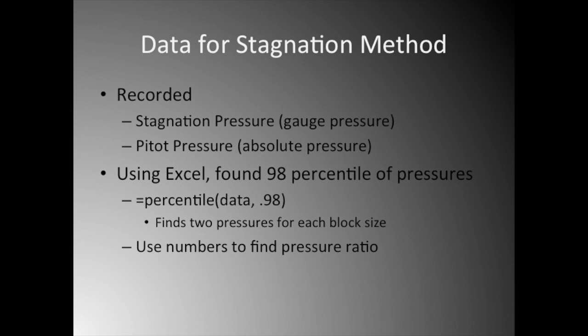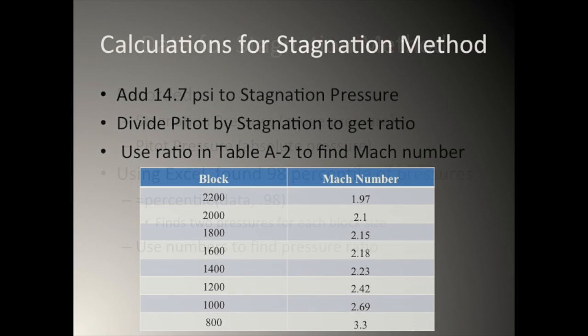Those numbers are then used to find the pressure ratio. For the stagnation pressure method of calibrating the supersonic wind tunnel, 14.7 psi was first added to the stagnation free stream pressure. The pitot tube pressure was divided by the stagnation pressure to get a pressure ratio. By using this ratio and table A2 from the Fundamentals of Aerodynamics book by John Anderson, the shock jump tables, the Mach number for each block size was found. As shown in the table, as the block size decreased, the Mach number increased from 1.97 to 3.3.